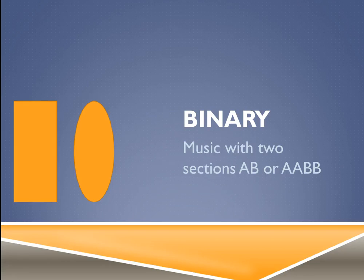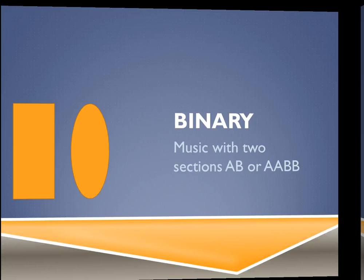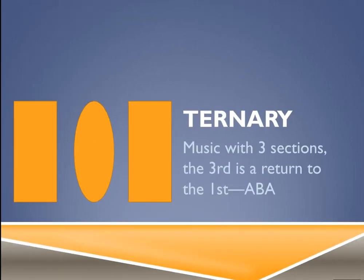Binary is music with two sections: A B, or A A B B — that's why there's a rectangle and an oval. Ternary, on the other hand, is music with three sections where the third is a return to the A section: A B A. Twinkle Twinkle Little Star is a great example — the opening is A, the 'up above the world so high' section is B, and the return to 'twinkle twinkle' is the A again.